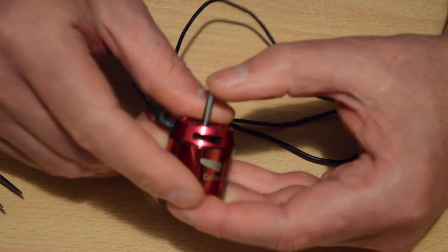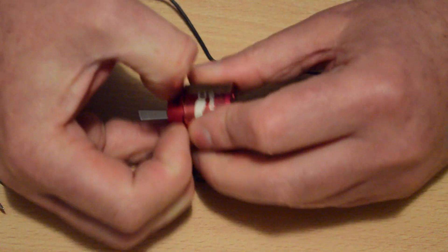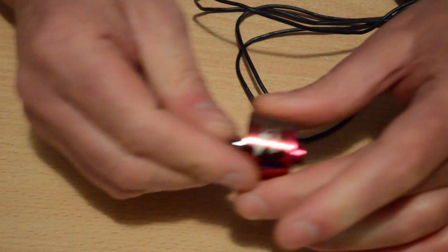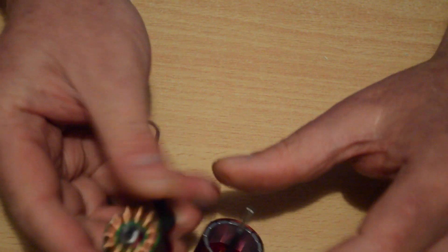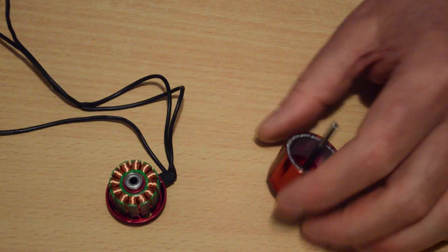You can simply pull the can out of the motor, which is a lot easier when the motor is on the arm because you've got a better hand. So now we have the two parts, can and the stator.